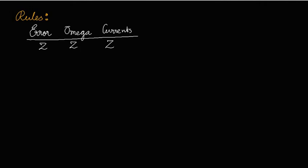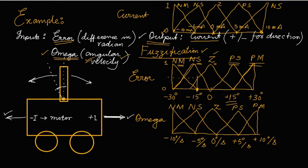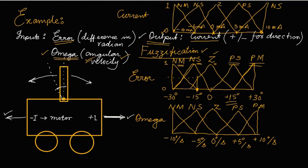This is very simple. When there is no error in the pendulum — the difference in radians is zero, meaning the pendulum is perpendicular — then we need not move this cart either to the right or to the left. And if angular velocity is also zero, there is no control action required.